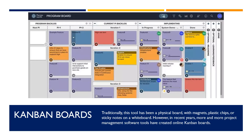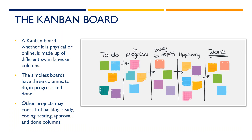A Kanban board is a tool to implement the Kanban method for projects. Traditionally, this tool has been a physical board with magnets, plastic chips, or sticky notes on a whiteboard. However, in recent years, more and more project management software tools have created online Kanban boards. A Kanban board, whether physical or online, is made up of different swim lanes or columns.